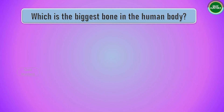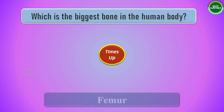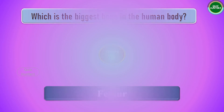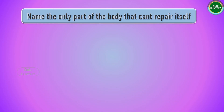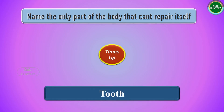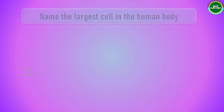Question number one: which is the biggest bone in the human body? The answer is the femur. Question number two: name the only part of the body that can't repair itself. The answer is the tooth — the tooth can't repair itself.